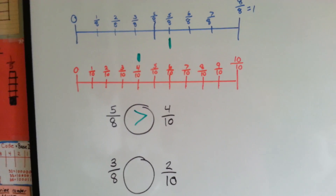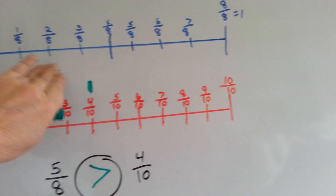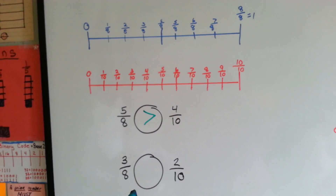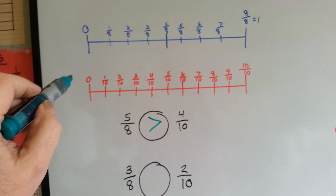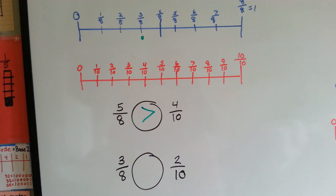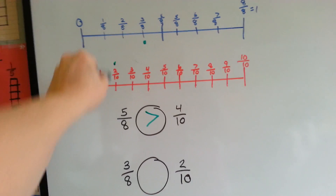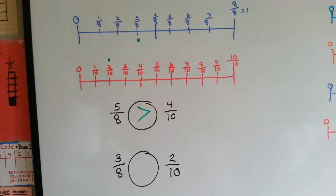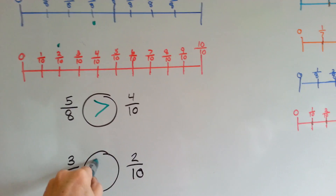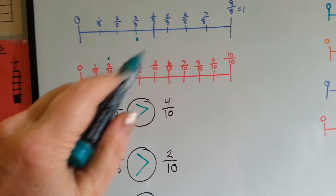How about 3 eighths or 2 tenths? Which one's bigger? Let's get rid of our marks and start fresh. Where's 3 eighths? It's right here. Where's 2 tenths? It's right here. So which one's bigger — which one's closer to the end? The 3 eighths is greater than 2 tenths. Number lines are easy.